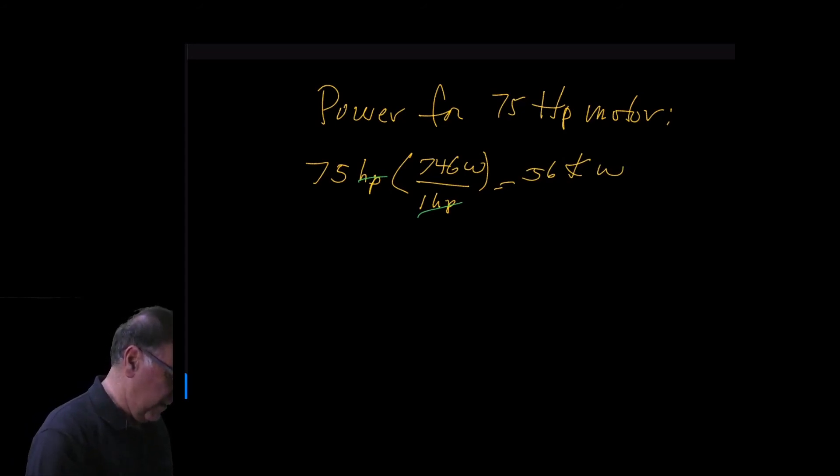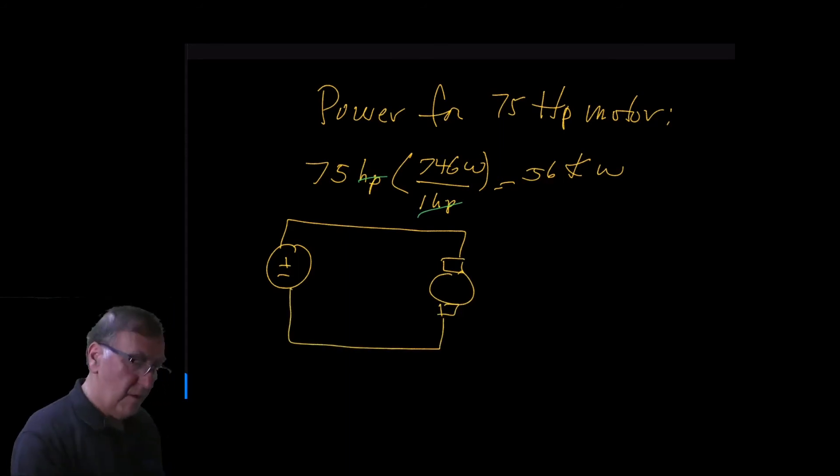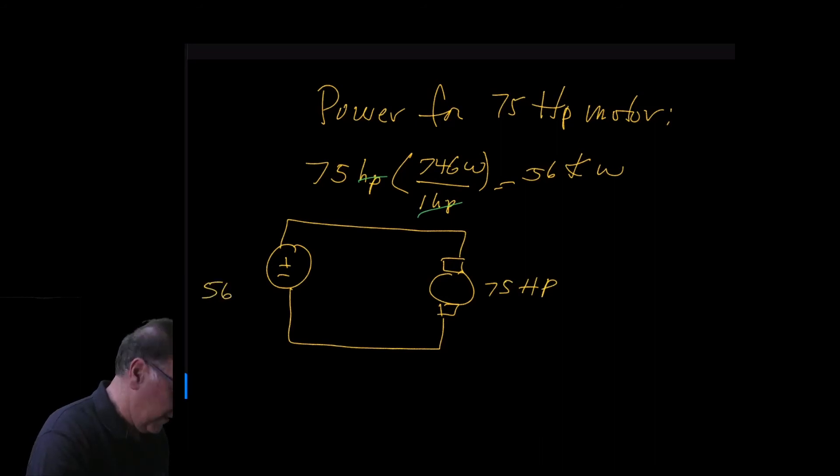So drawing a circuit here of the motor, we have a voltage source. So we have a 75 horsepower motor and a 56 kilowatt generator. And we can draw a partition here. So this separates the mechanical side and electrical side. So this is the mechanical side and this is the electrical side.